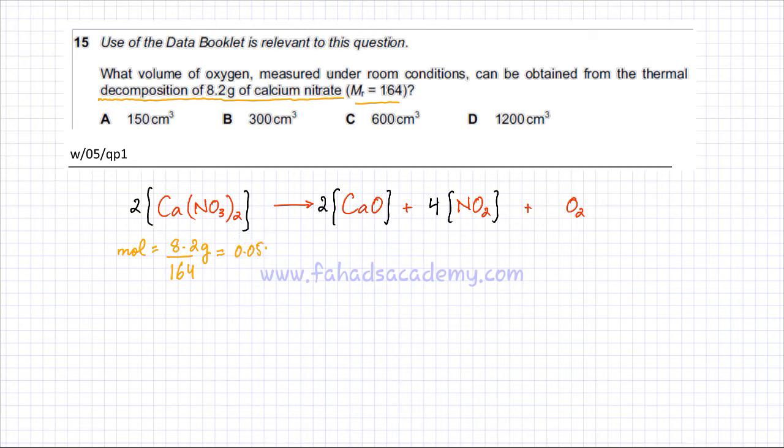It's 0.05 moles of calcium nitrate. According to the ratios given in the equation, 2 molecules of calcium nitrate produce just 1 molecule of O2, so it's 2 ratio 1. If you have 0.05 moles of calcium nitrate, the amount of O2 is going to be 0.025 moles. I've divided 0.05 by 2 because the ratio is 2 to 1.